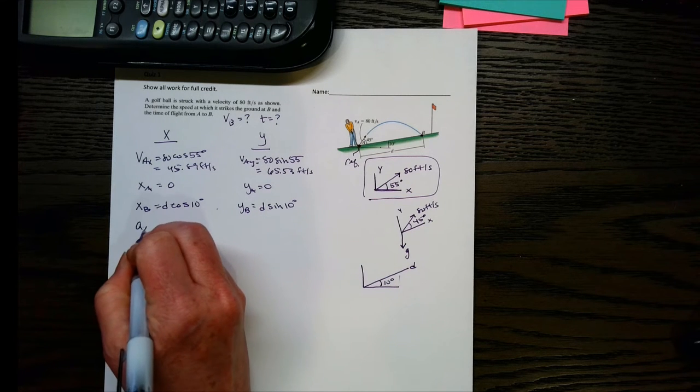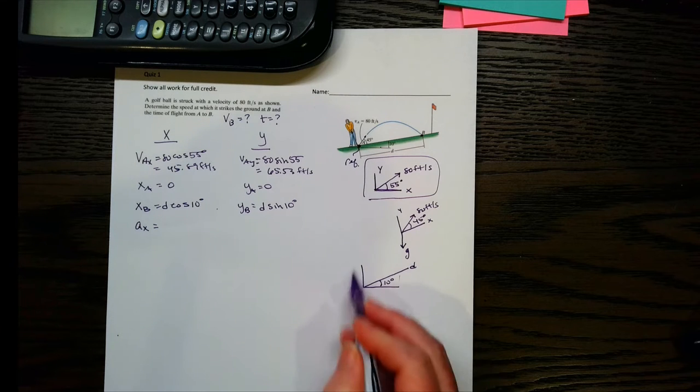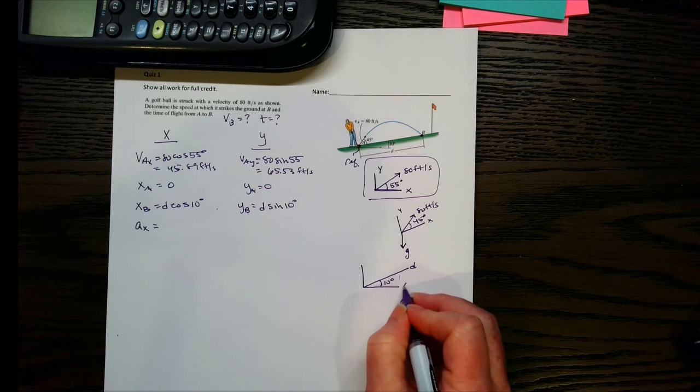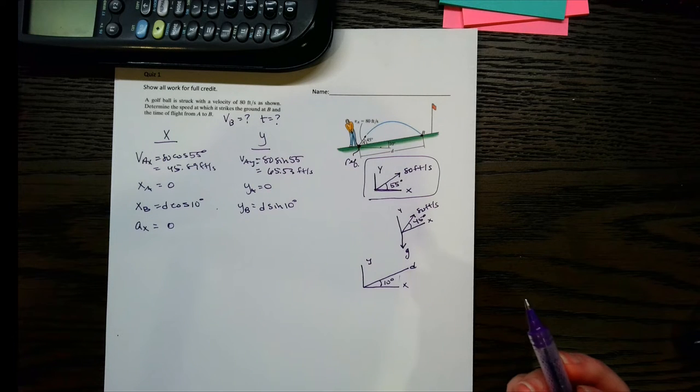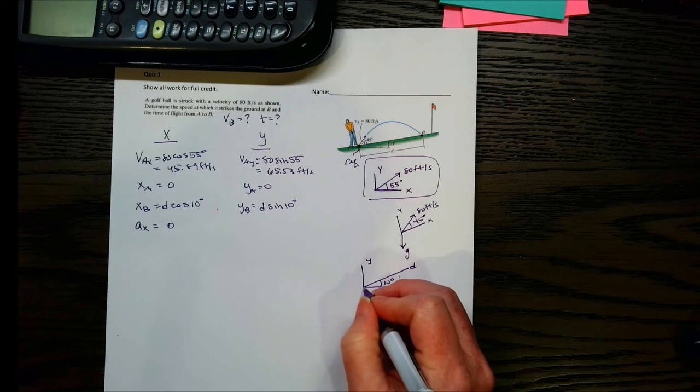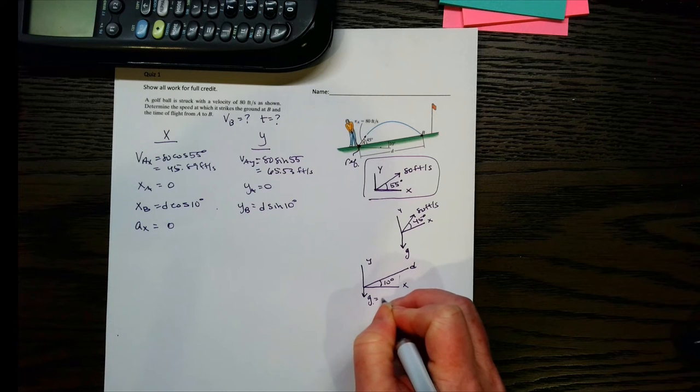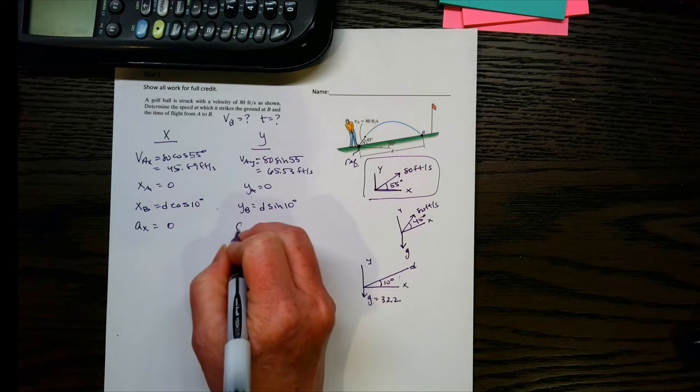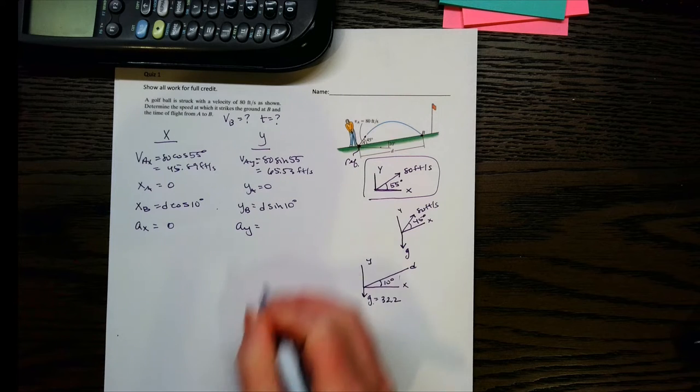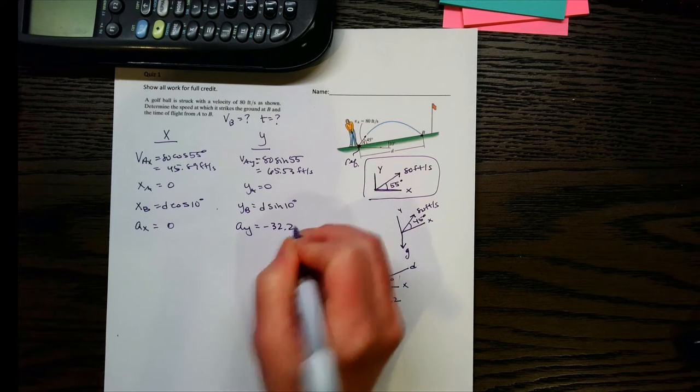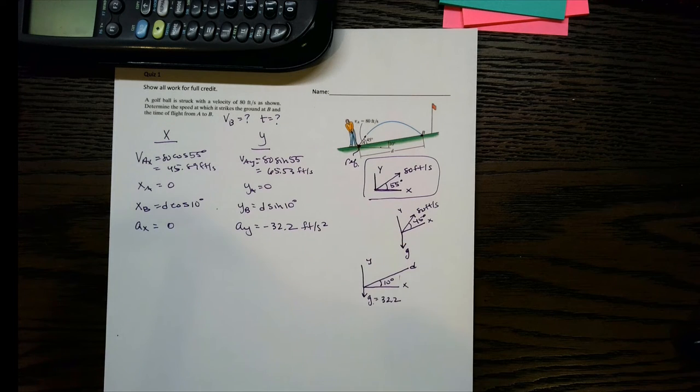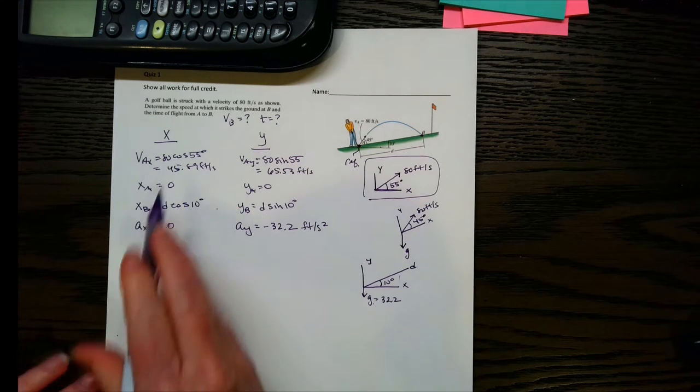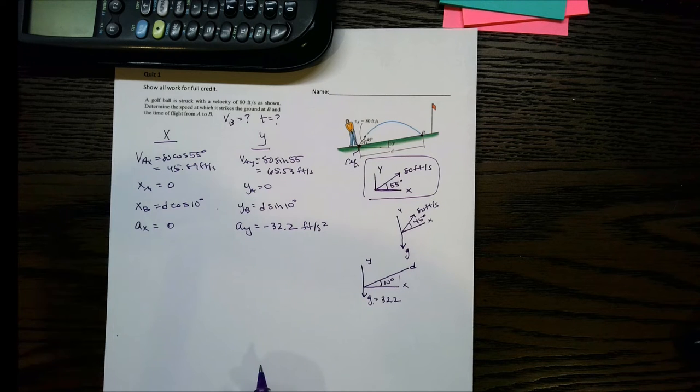Now what about acceleration? Well, if I use this frame here, the standard xy frame, Ax is going to be 0 because the only thing we have for acceleration is gravity. Gravity acts straight down. So Ay then will be negative 32.2 because it's going down, and that's feet per second squared. Now we've got all of our preliminary information here. Let's go ahead and start looking at equations.